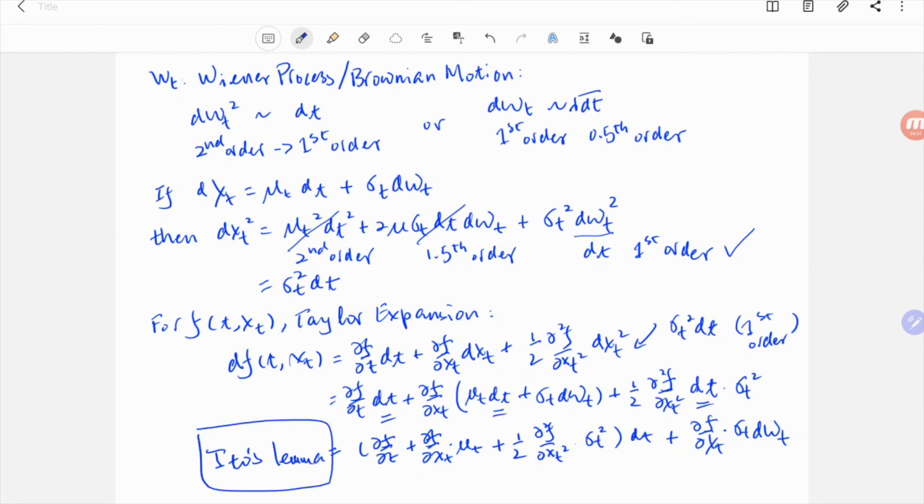So that's it, one of the ways to understand Ito's lemma in stochastic calculus. Again, the key is second order dwt squared is the same order as first order dt.